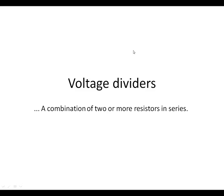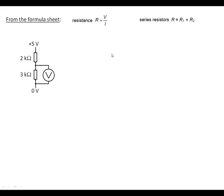Voltage dividers. I'm going to talk you through how to work out three different examples for voltage dividers. So the first example, what we've got is five volts across a two kilohm and three kilohm resistor, and we've got to work out how many volts we've got across the three kilohm resistor.